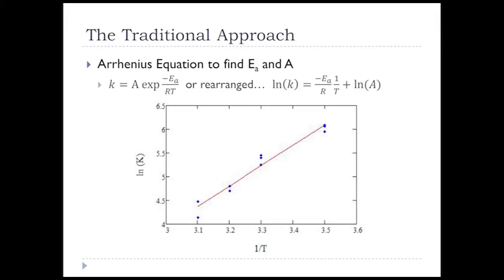This is the traditional approach taught in kinetics class. We take the Arrhenius expression to find Ea and A, the pre-exponential factor. If we take the natural log of both sides and rearrange, this looks like the equation for a line: we plot natural log of K on the Y-axis and one over temperature on the X-axis. The slope is equal to negative Ea over R, and the intercept is equal to natural log of A. With isothermal runs, we run each experiment, record the temperature, and plot the inverse temperature versus the natural log of the kinetic parameter.